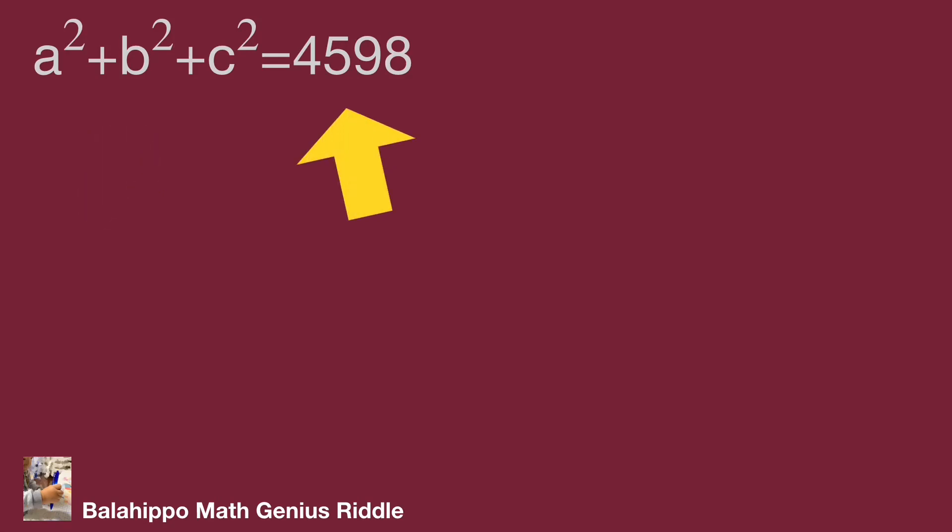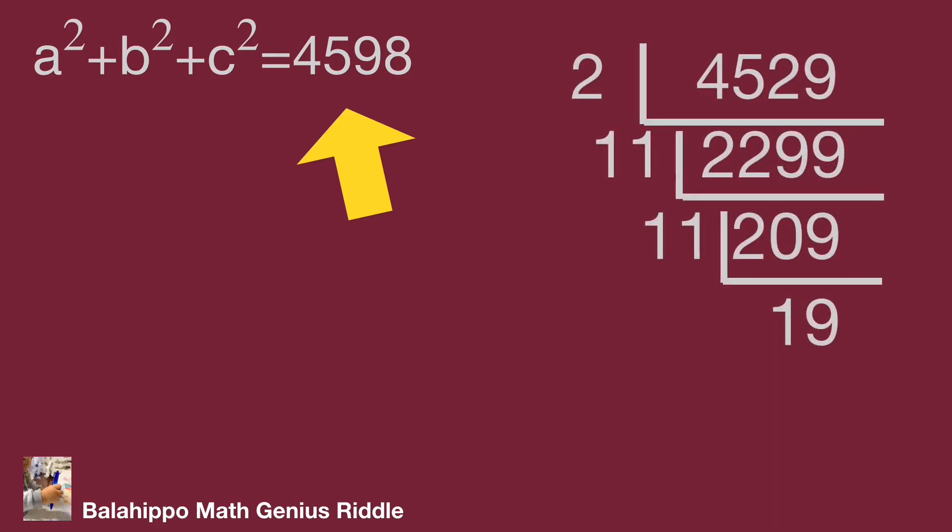Then check the 4598 in the right hand side. Try this value by prime factorizations. Then we get 4598 equal to 2 × 11 × 11 × 19. Simplify as 2 × 11² × 19.